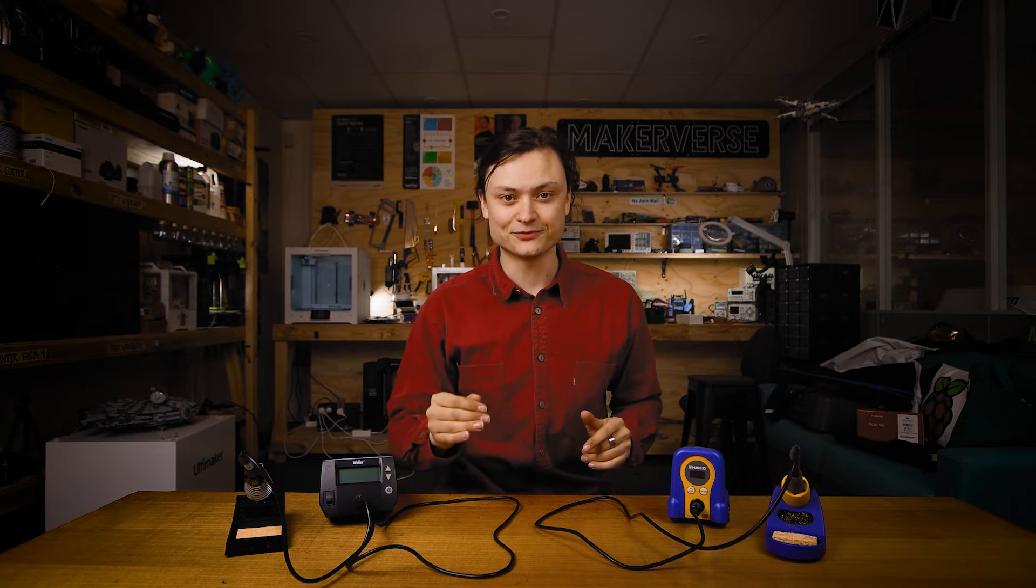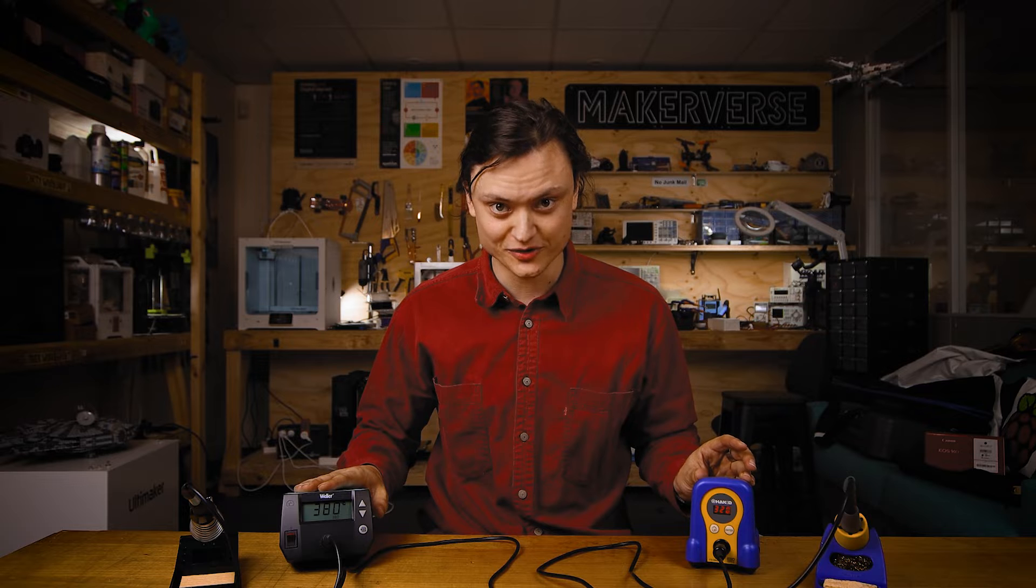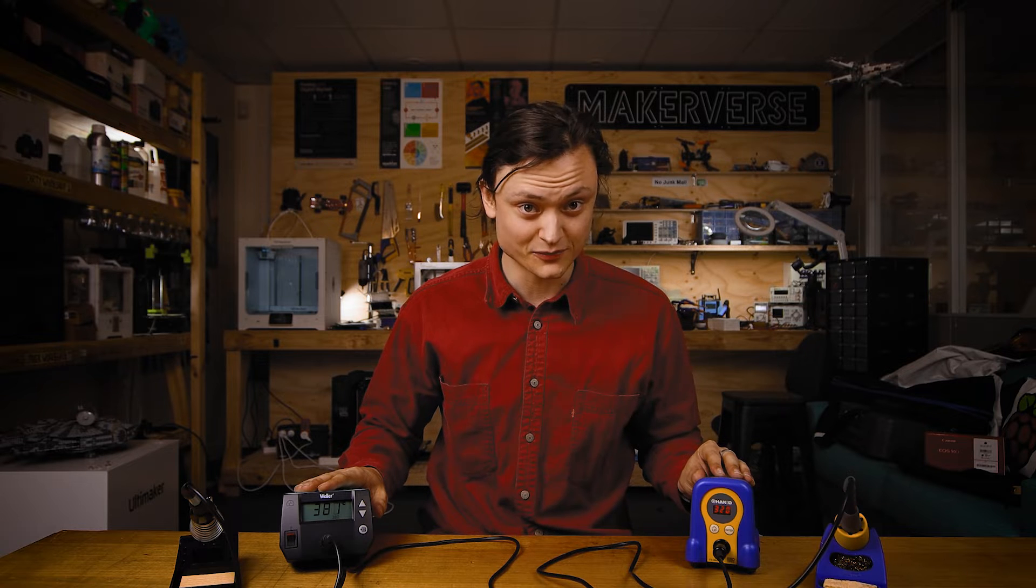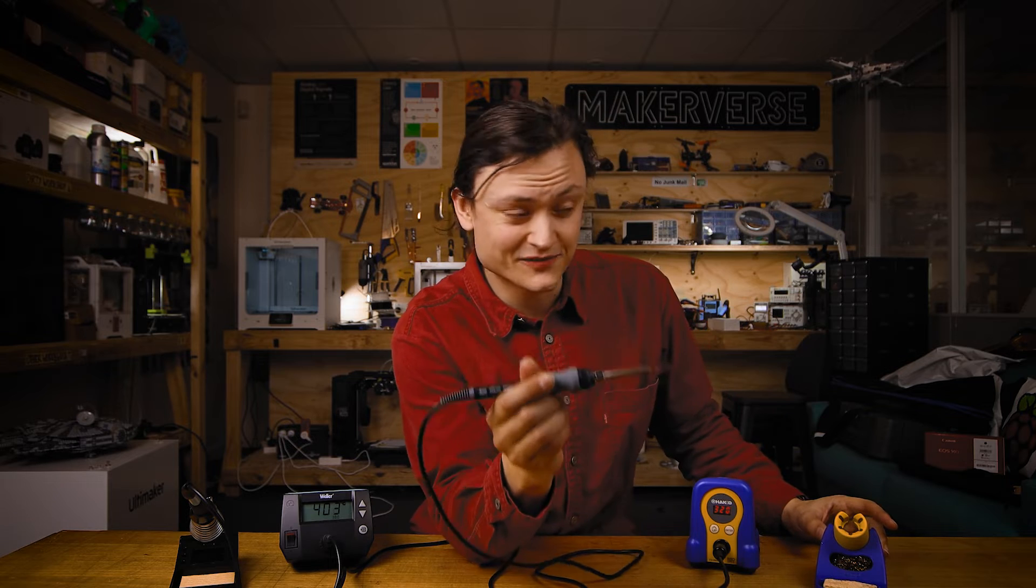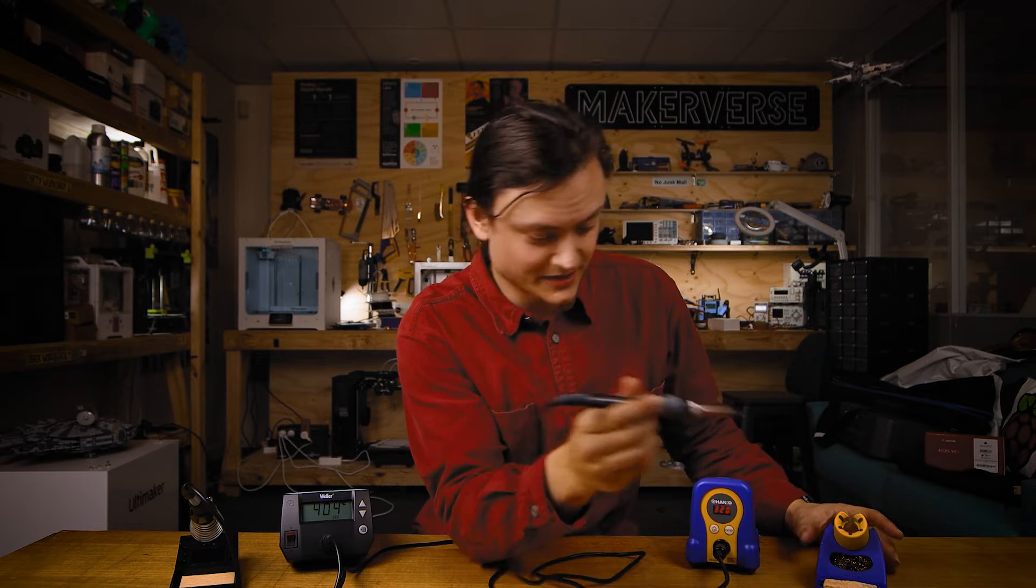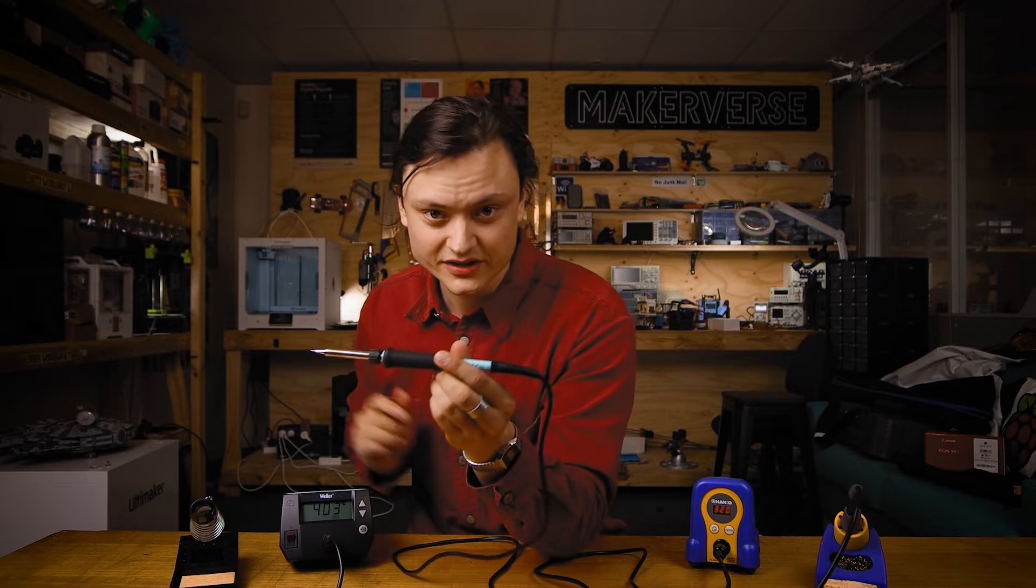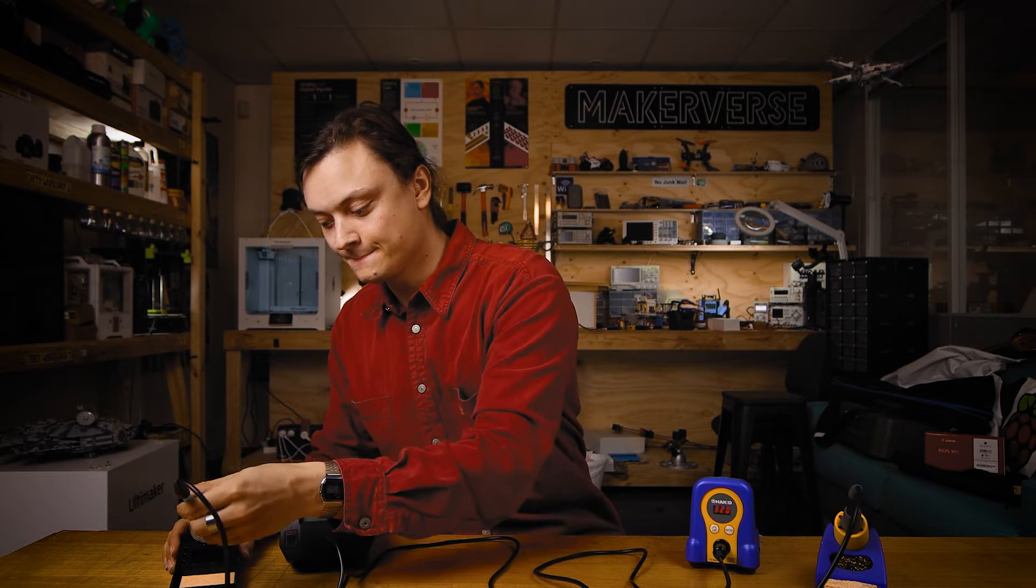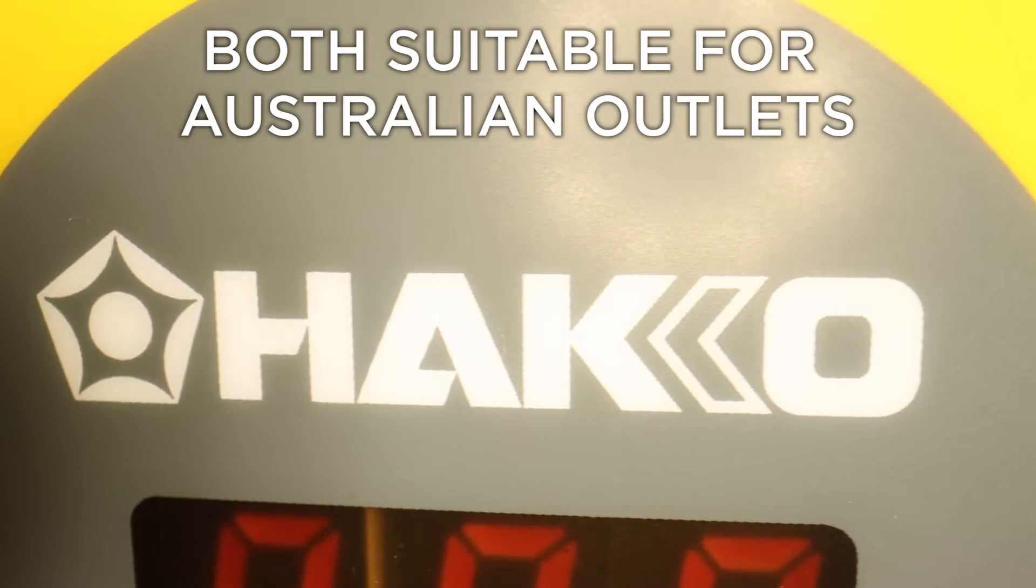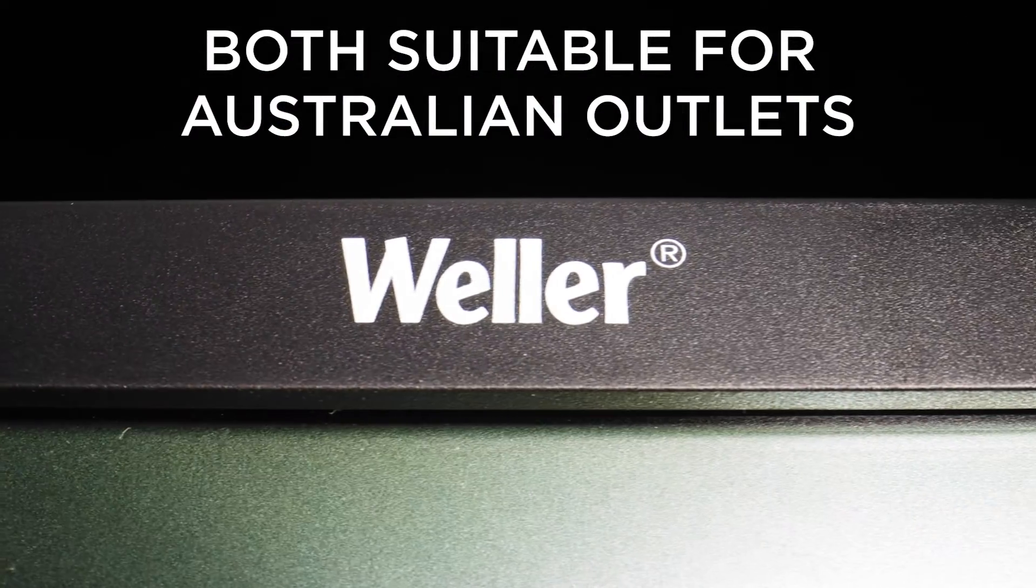We'll now push through the similarities and the differences of this German design station versus this Japanese design station. Both turned on, both have electricity running through them. This one, 70 volts. This guy over here, also 70 watts. The pencil, this gets 65 watts direct to the soldering iron, whereas the Weller over here gets 70 watts directly to the soldering iron. 5 watts different. The voltage of the Heiko is 240 volts, whereas the voltage of the Weller is 230 volts.